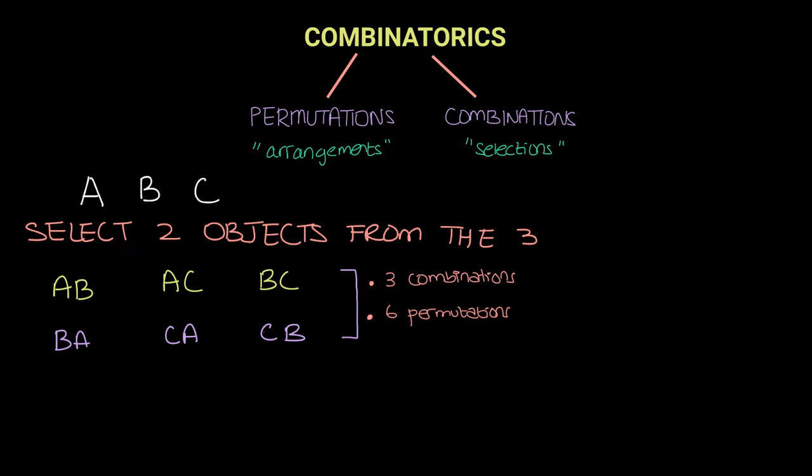This is the difference between permutations and combinations. When you are only asked to select objects, order does not matter, but if you are asked to permute or arrange objects, you need to select them and then arrange them.